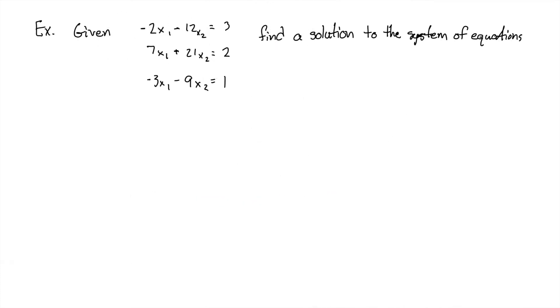For our next problem, we're given three equations and asked to find a solution. We want to write this in augmented matrix form as such. Then we're going to reduce it. After we row reduce it, we're going to get this matrix right here.